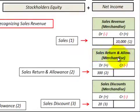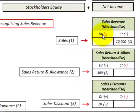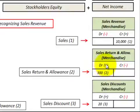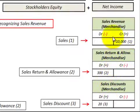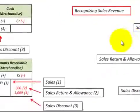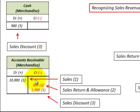Sales returns and allowances and sales discounts are both contra accounts to the sales revenue. A debit decreases the sales revenue and a credit increases it. With these contra accounts, it's the opposite — a debit increases the sales return and allowance and a credit reduces it. These two contra accounts reduce sales revenue.